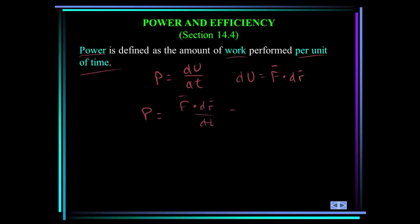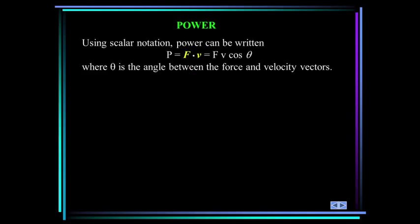So making this substitution, we can write P equals F dot dr over dt. Now dr/dt is nothing but the velocity, so this is F dot V. Thus, power is a scalar defined as the product of the force and velocity components acting in the same direction. Using scalar notation, the power can be written as P = F·V·cos θ, where θ is the angle between the force and velocity vectors. So if the velocity of a body acted on by a force F is known, the power can be determined by calculating the dot product or by multiplying force and velocity components.